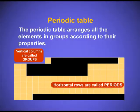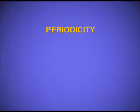Groups are the vertical columns and the periods are the horizontal rows. Periodicity is defined as the elements in the same group having similar properties — that is, the properties reoccur or repeat themselves after a regular interval.